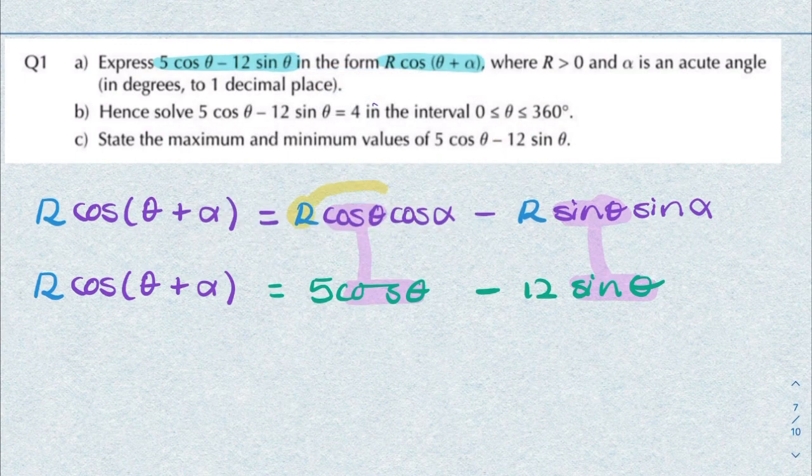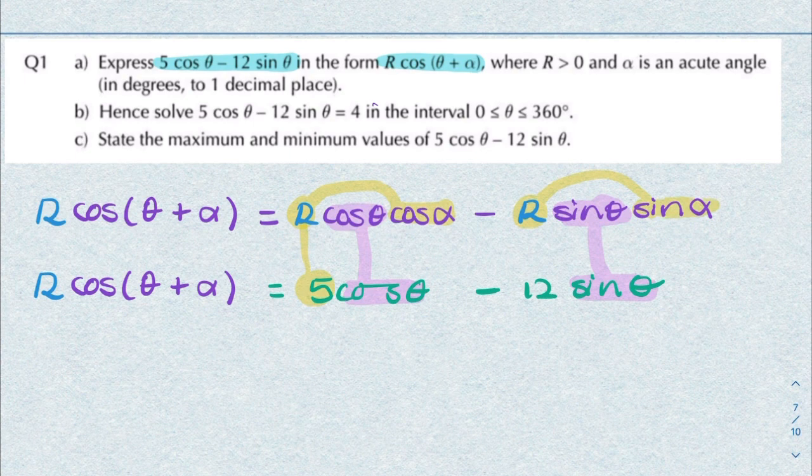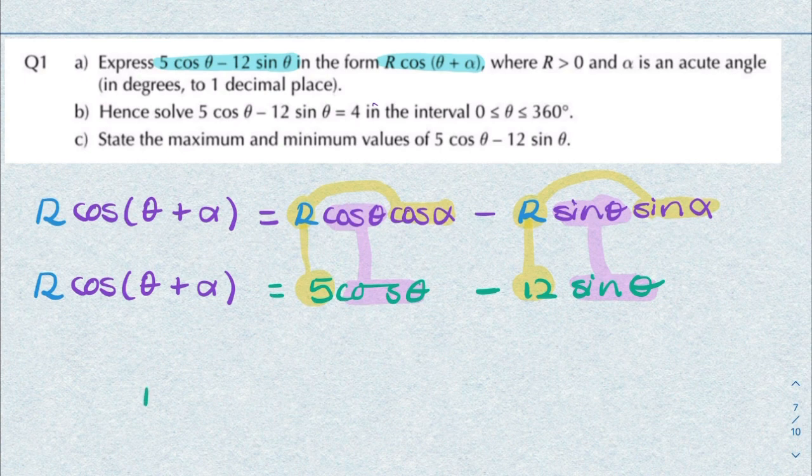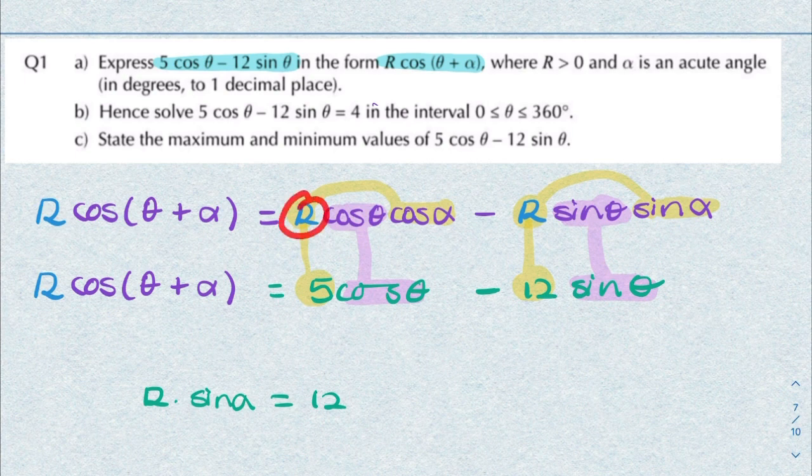R multiplied by cosine alpha equals 5, and R multiplied by sine alpha equals 12. So that gives you two equations: R sine alpha equals 12, and R cosine alpha equals 5.